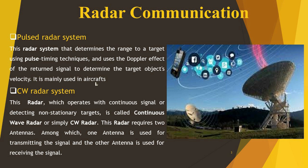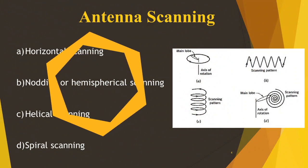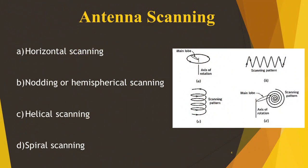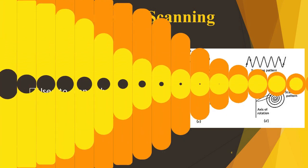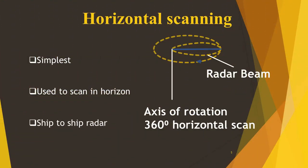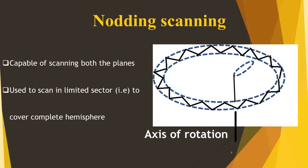Next we move on to antenna scanning. There are four types of antenna scanning: horizontal scanning, nodding scanning, helical scanning, and spiral scanning. Horizontal scanning is the simplest method, used to scan in a horizontal plane. It is used in ship-to-ship radar and the axis of rotation of the scan covers around 360 degrees.